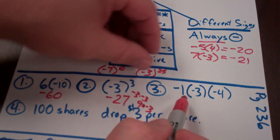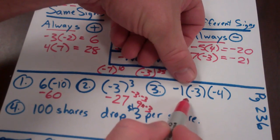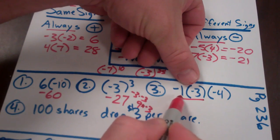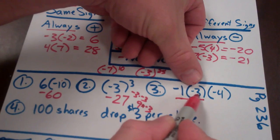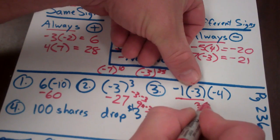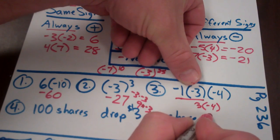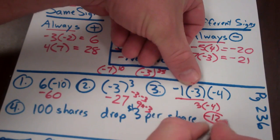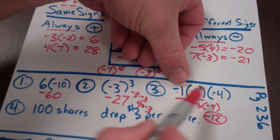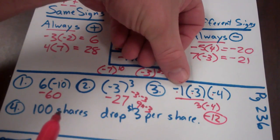Problem three, you can do it two ways — two numbers at a time, or count the negatives. Negative one times negative three has the same sign, so it's positive three. Then positive three times negative four has different signs, so the answer is negative twelve. Or I could count: one, two, three negatives multiplied together — three is odd, so it's going to be negative.